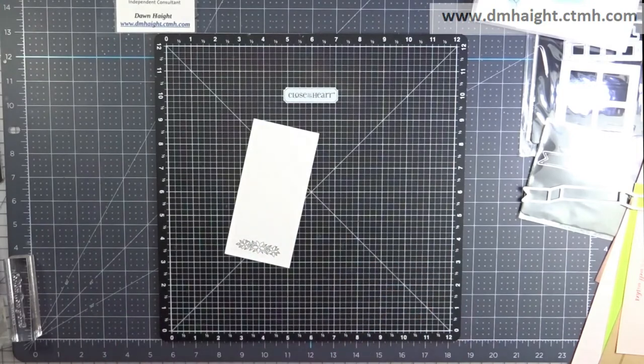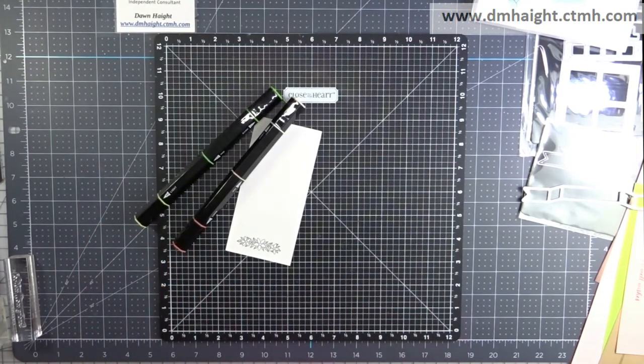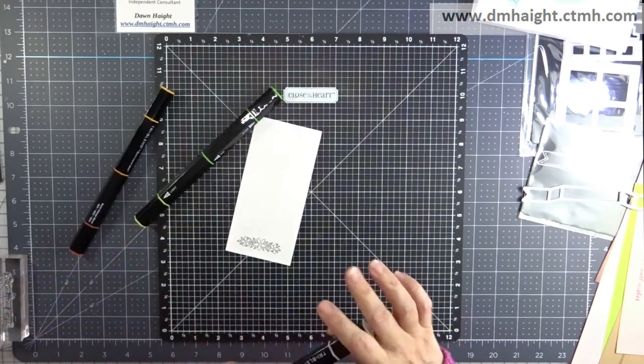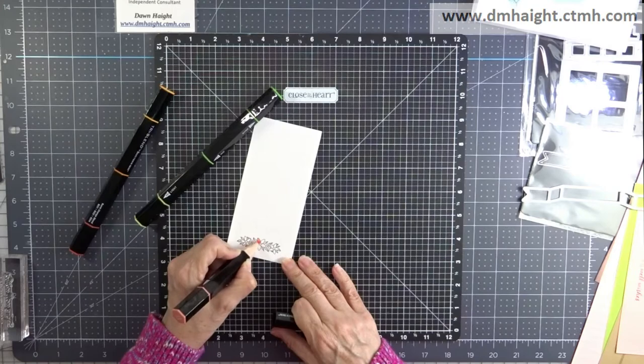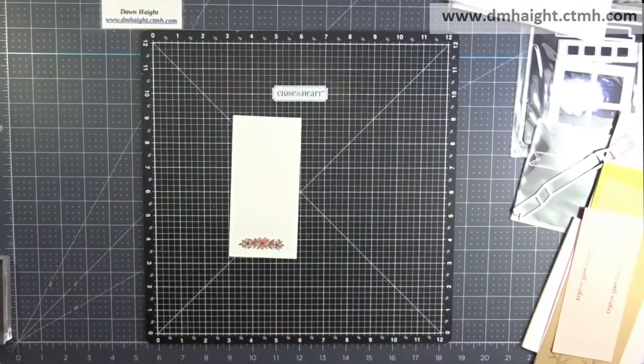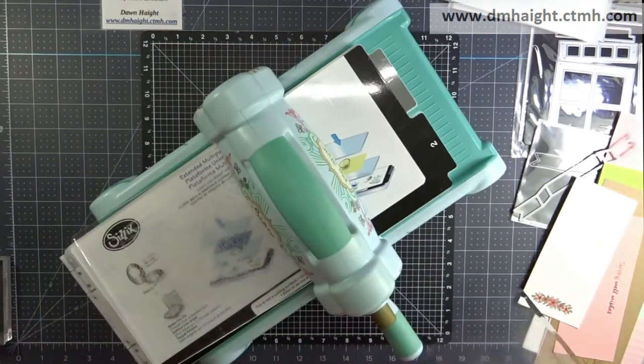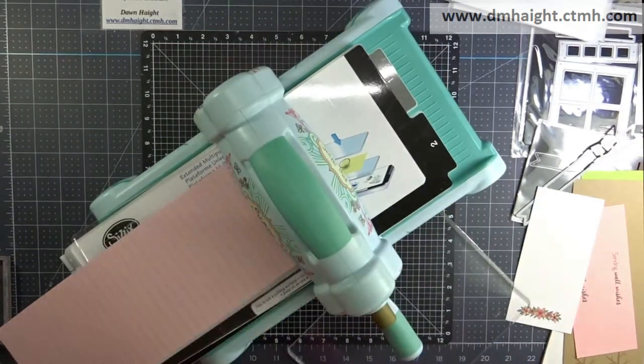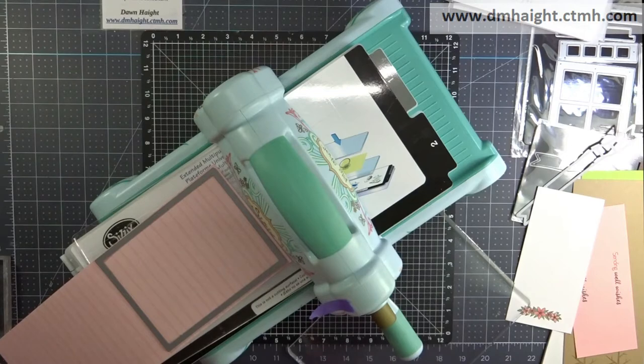So I'm going to color this image in using some tri-blend markers. I've got coral and dull green and kind of a burnt orange. And so I'm skipping ahead. I've colored everything in off screen and now I'm going to do a whole bunch of cutting using my Big Shot.